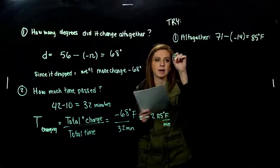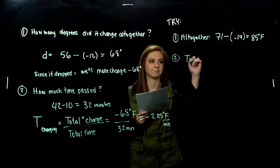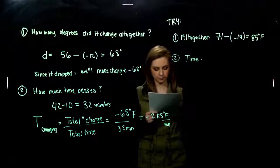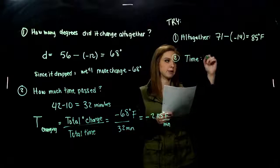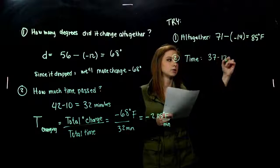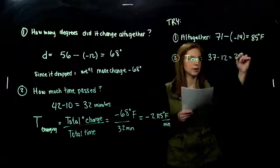And how much time had passed? From 2:12 to 2:37, we are looking at 25 minutes. 37 minus 12, 25 minutes.